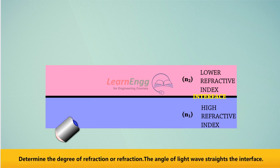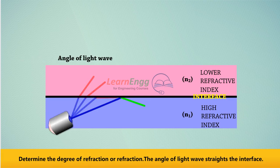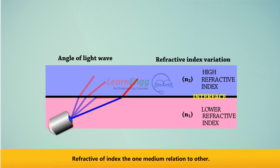Two facts must be considered to determine the degree of refraction or reflection: the angle at which the light wave strikes the interface, and the refractive index of one medium in relation to the other.